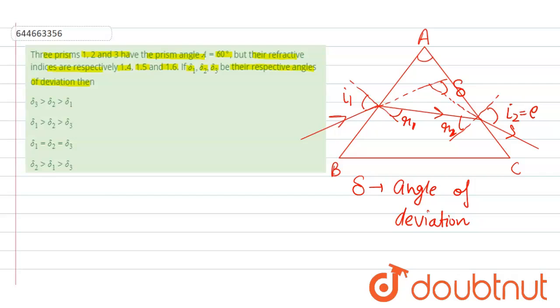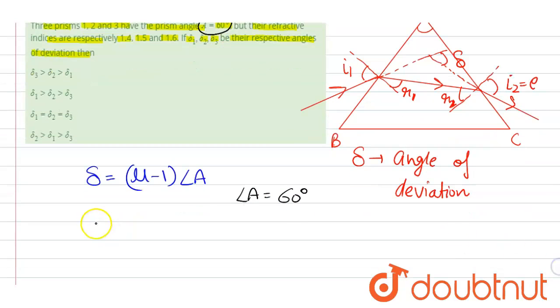Now there is a relation between angle of deviation and refractive index and angle of prism which is del equals mu minus 1 into angle A and according to the question angle A is same for three prisms, that is 60 degrees. So which means that del is directly proportional to mu.